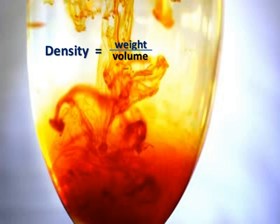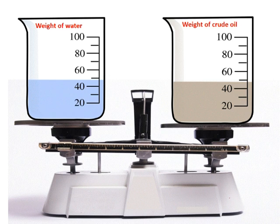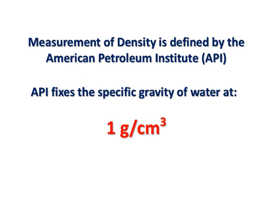What is density? Density is the weight divided by volume. Specific gravity is a dimensionless number, which is a measure of the density of a substance compared to the density of pure water at an arbitrary temperature and pressure. As such, we measure the weight of water versus the weight of crude oil. Measurement of density is defined by the American Petroleum Institute. API fixes the specific gravity of water at 1 gram per cubic centimeter.